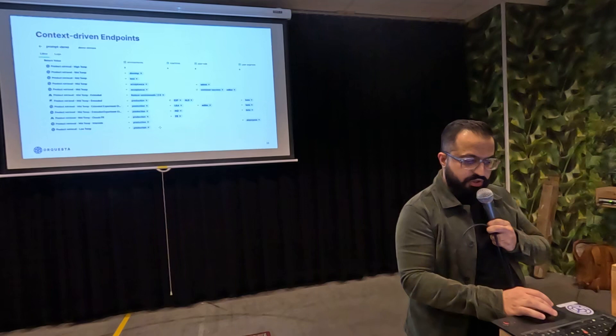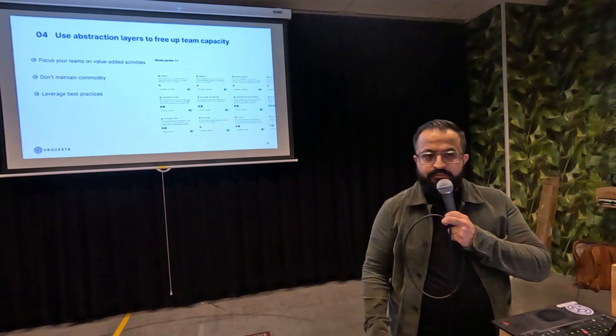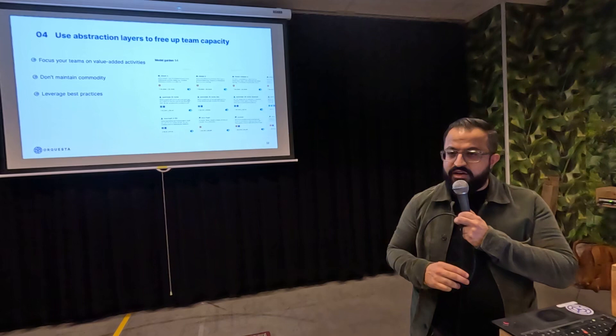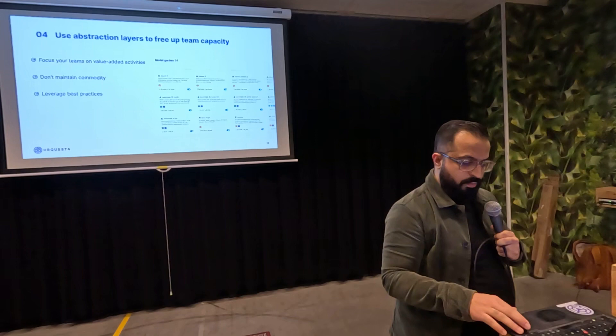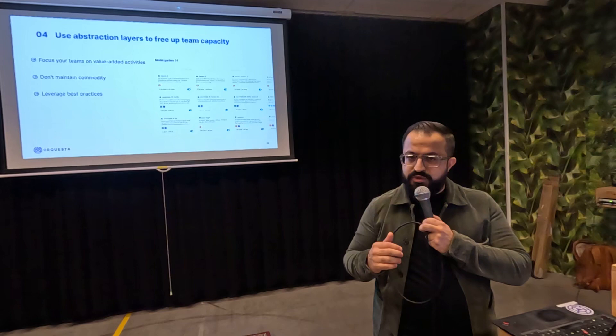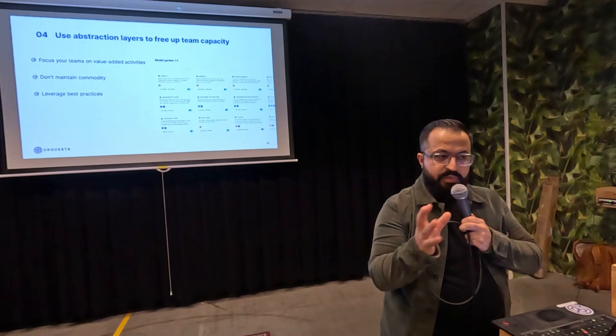Finally, the use of abstraction layers to free up team capacity. Through our generative AI gateway, with a single line of code you're able to connect to at this moment 65 different models. With the flexible rules engine, you're able to in real time switch between models, providers, and experiments. This frees up a lot of the commodity work that teams normally maintain, so they can focus on actual use cases and value adds while leveraging best practices ingrained in an opinionated way in their workflow.